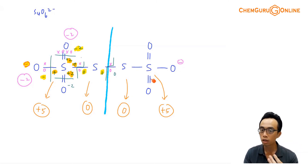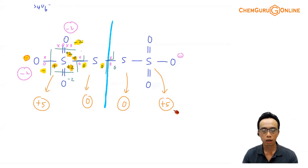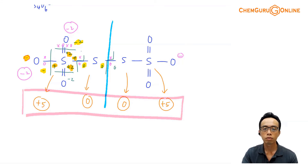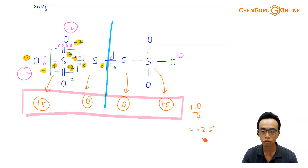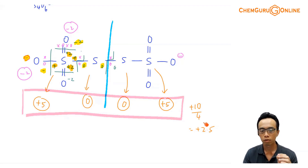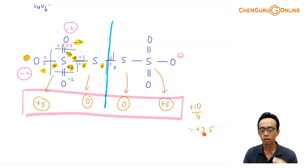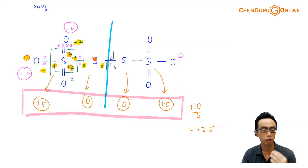We can see that the average and actual oxidation states are different things. If we add up the actual oxidation states — 5 plus 0 plus 0 plus 5 — we get plus 10, divided by 4 sulfur atoms, giving plus 2.5. That confirms the average oxidation state we calculated earlier. The key takeaway is: average oxidation state works reasonably well and we will still use it most of the time, but conceptually it doesn't make sense for an element to have a plus 2.5 oxidation state, since by definition oxidation state refers to the charge the species acquires as an ion.